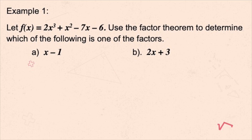Let's have an example. Let f of x be equal to 2x cubed plus x squared minus 7x minus 6. Use the factor theorem to determine which of the following is one of the factors: x minus 1, or 2x plus 3. For the first situation, x minus 1, the constant here is negative 1, so we get the opposite, which will be positive 1.